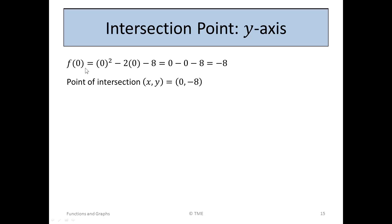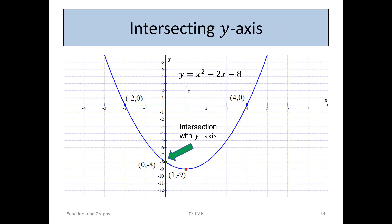We don't want to move to the right or to the left. So f of 0 is 0 squared minus 2 times 0 minus 8, plugging in the values. Or 0, minus 0, minus 8 is minus 8. So our point of intersection, x, y, is 0 minus 8, as we would expect.